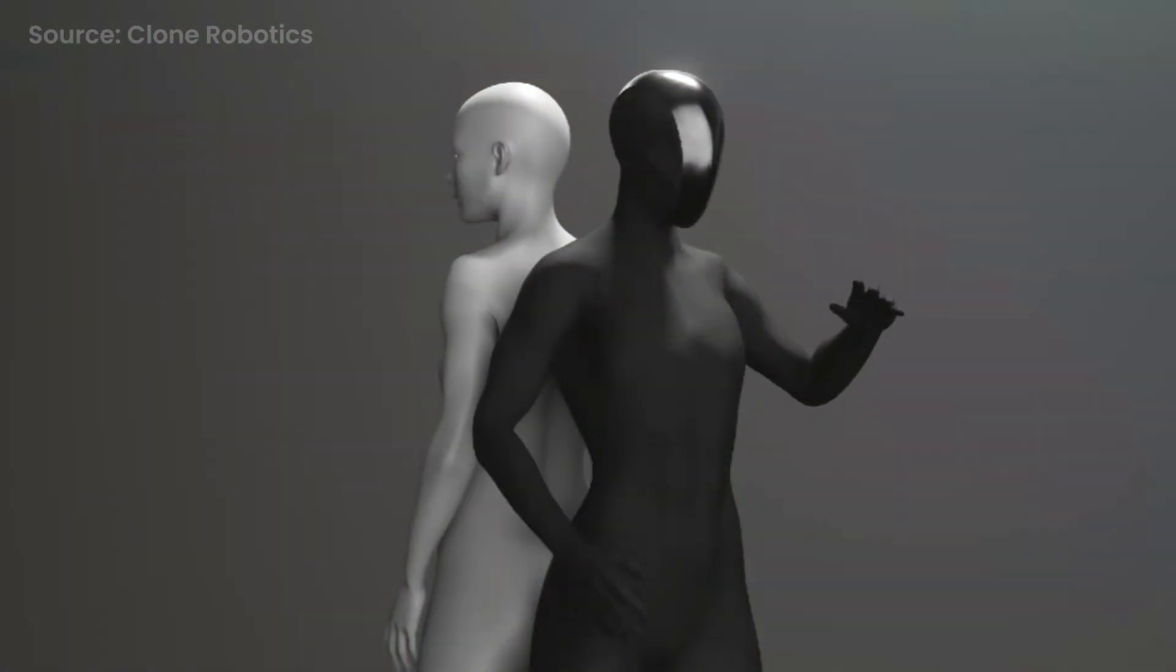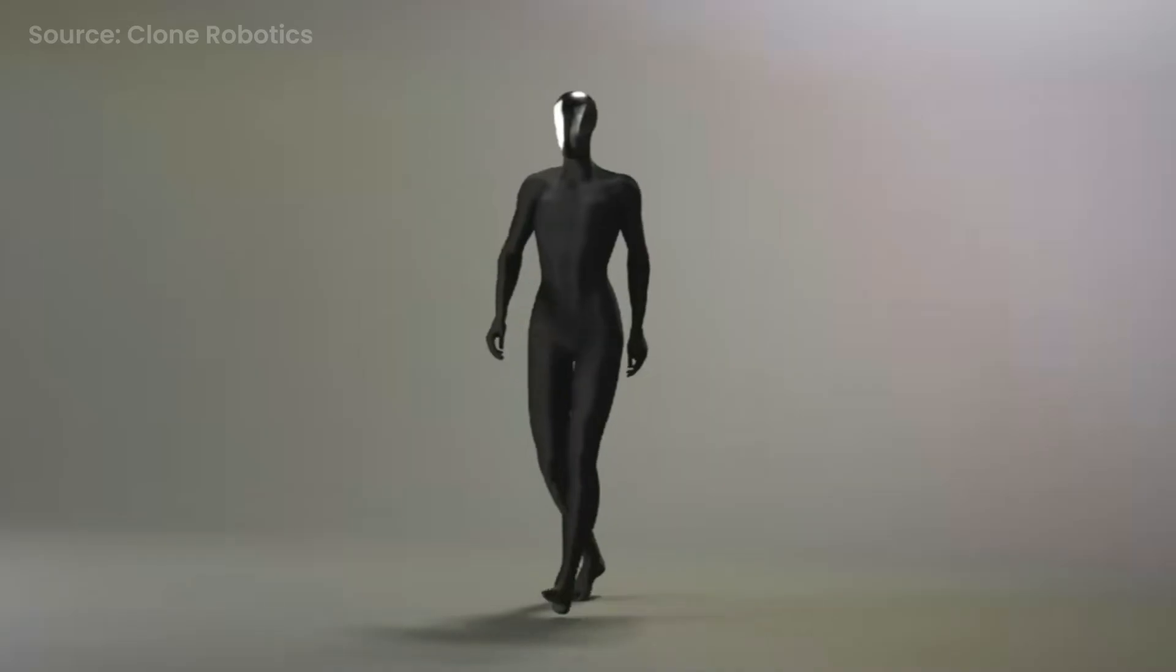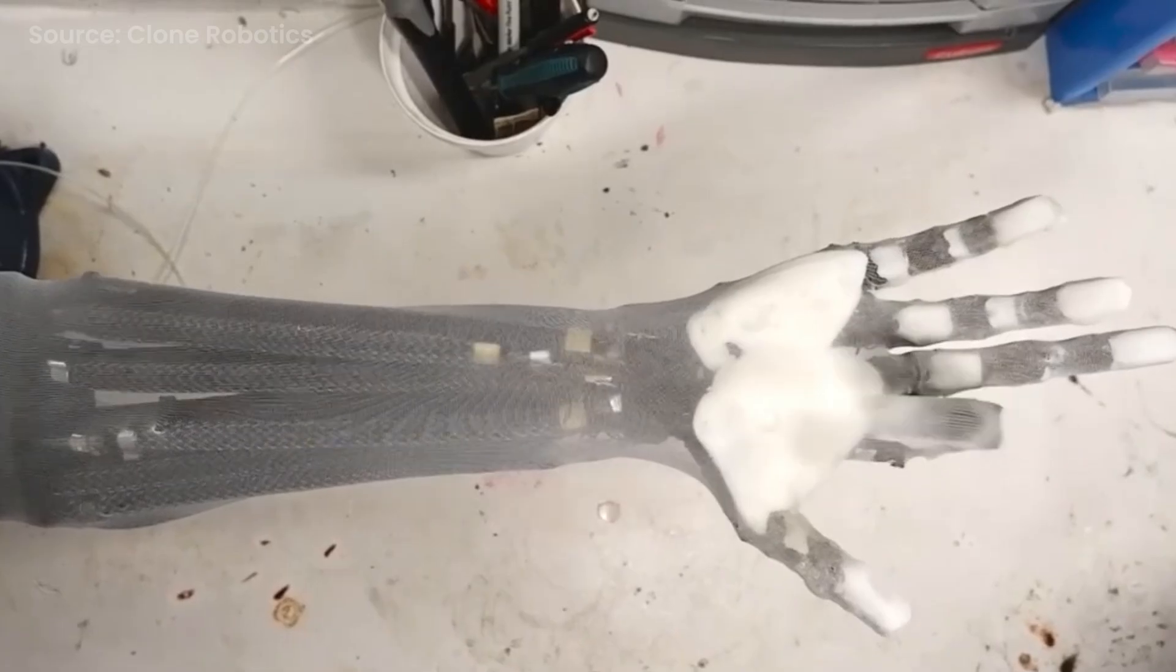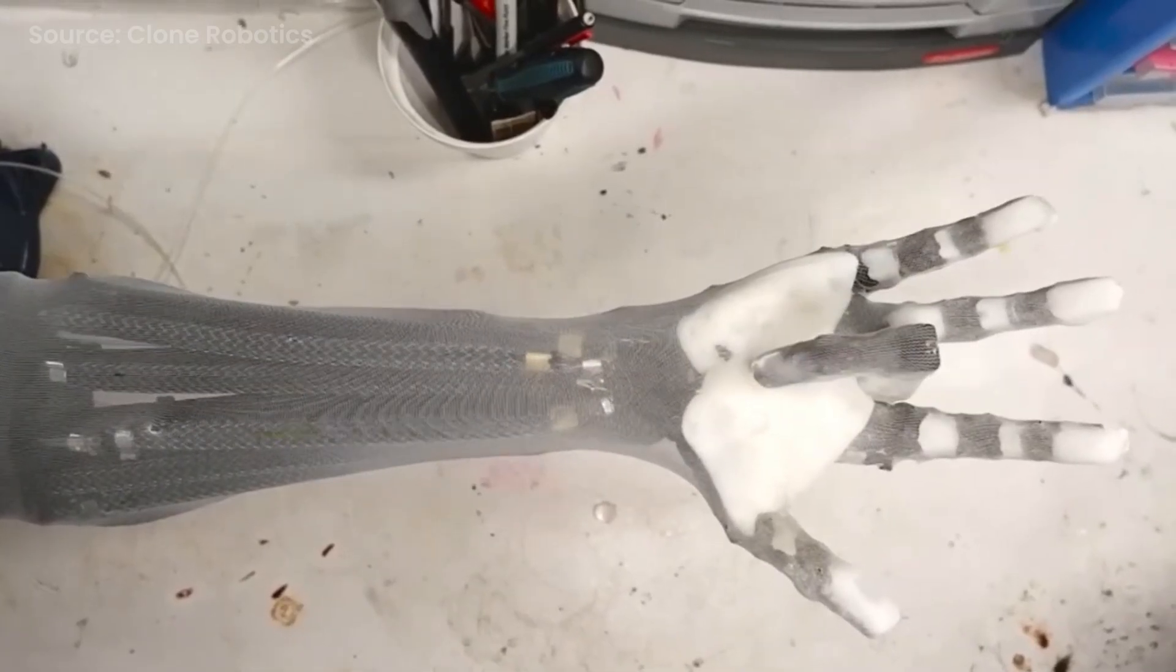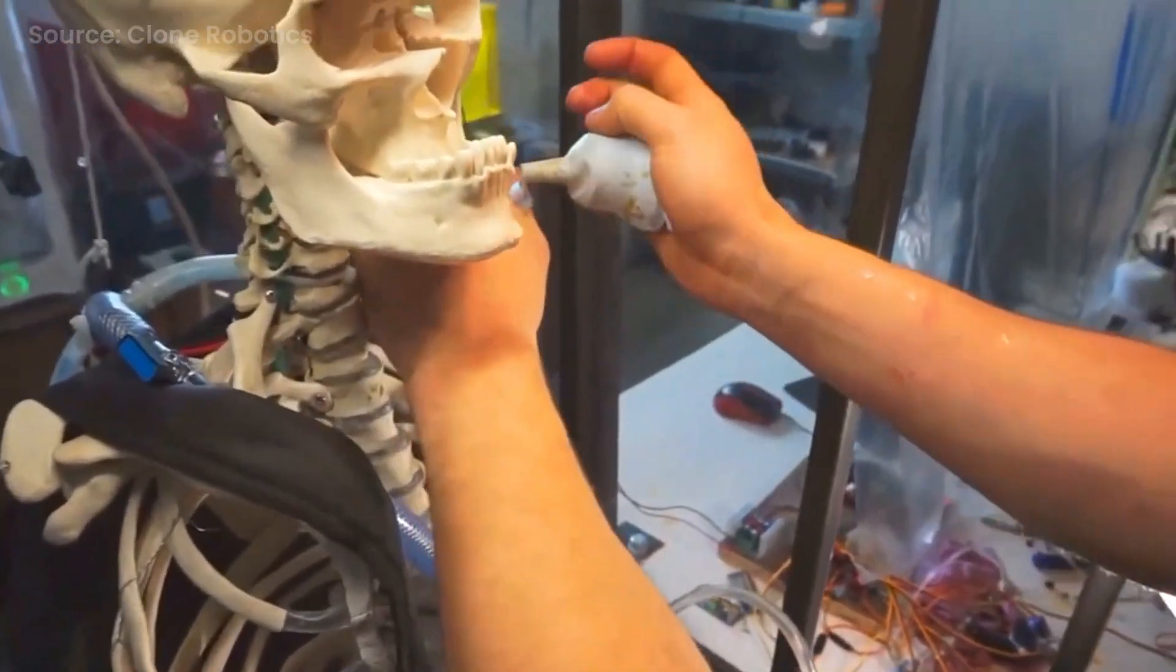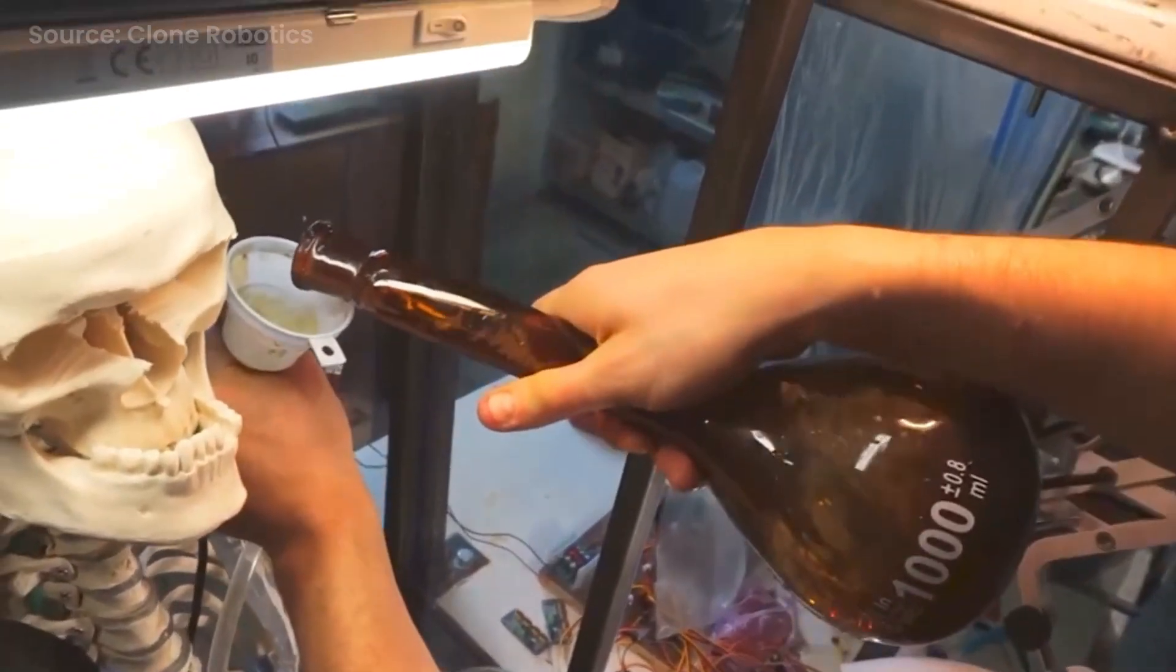Anyways, moving on to the most exciting and also creepy bit, and that is the torso. Now if you remember earlier in the video, I mentioned that Clone's approach to developing artificial muscles is untraditional, and that's because Clone is using water-powered artificial muscles compared to the more traditional mechanical actuators.